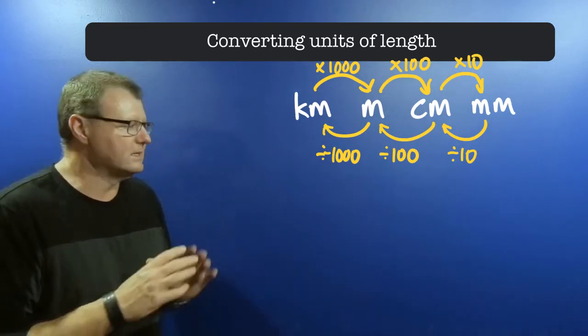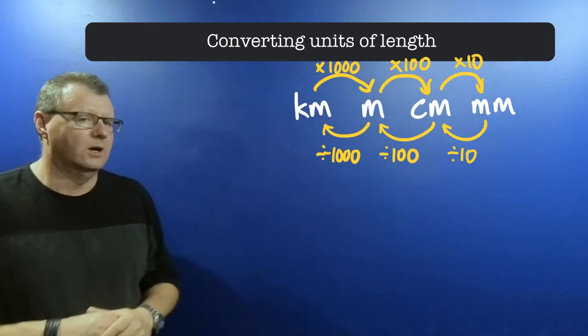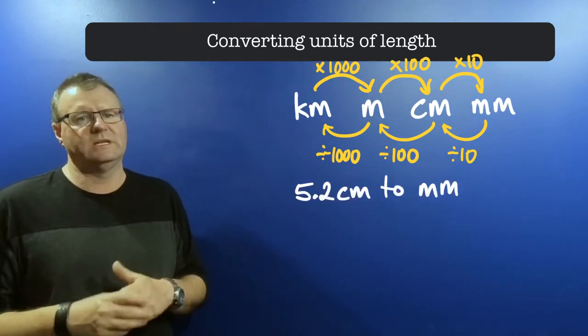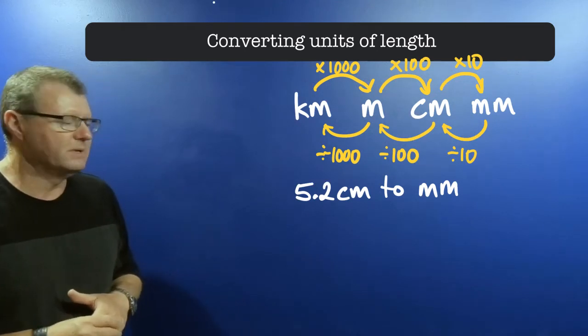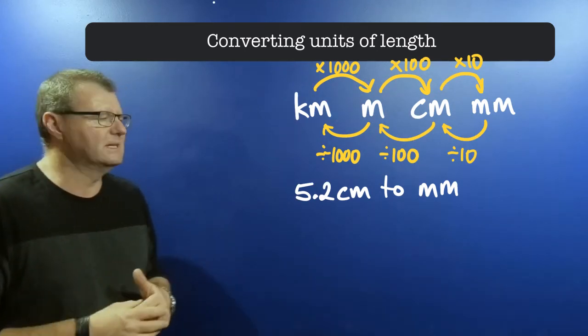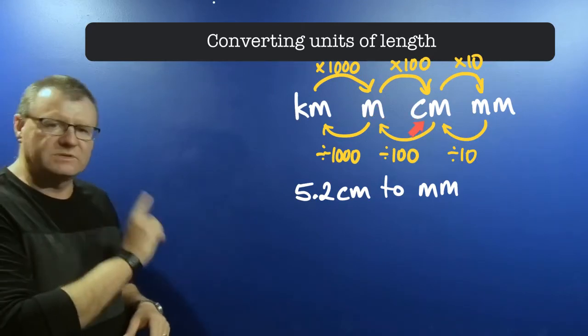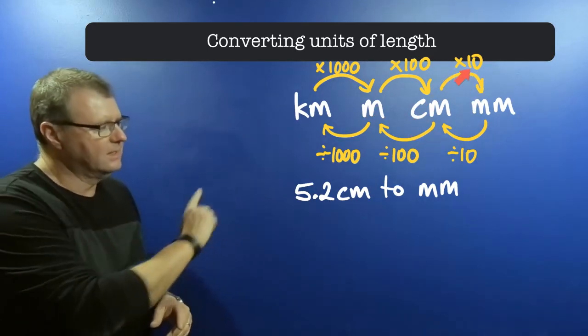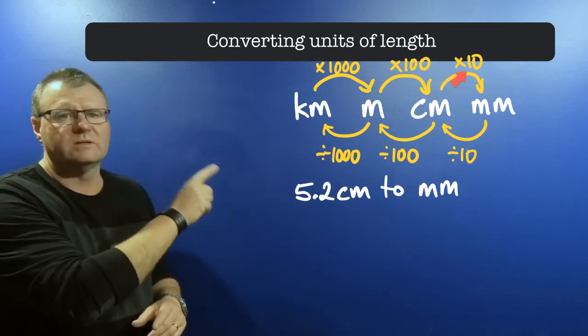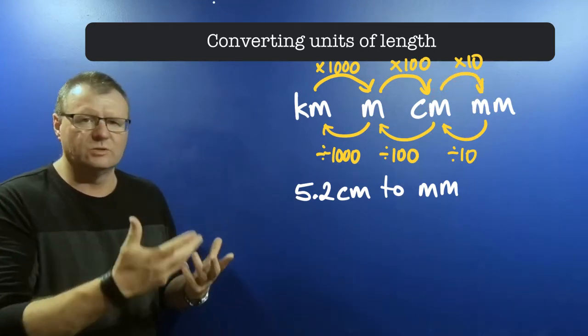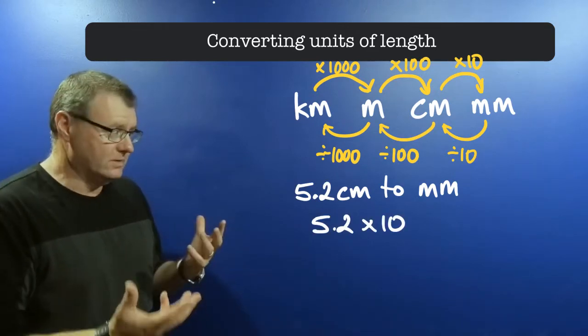Here's a conversion you can do: convert 5.2 centimeters to millimeters. I start at my centimeters, and I've got 5.2 centimeters. I want to go from centimeters to millimeters, so if I follow my chart, the arrow tells me that I'm going to multiply by 10.